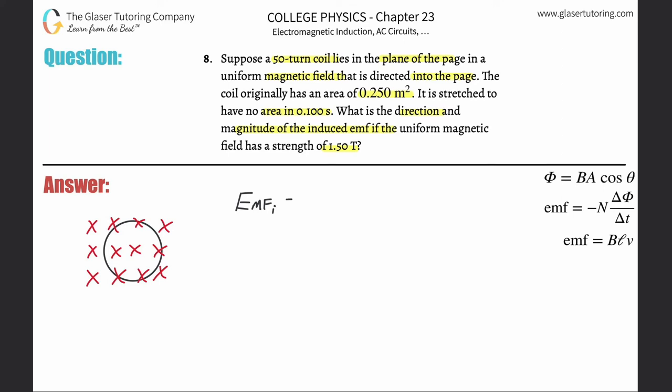With a little i for induced if you want, equals negative N, which represents the number of turns, multiplied by the changing magnetic flux divided by the change in time. They tell us the time changes from zero to 0.1 seconds, so we know the change in time.